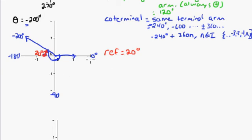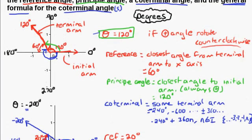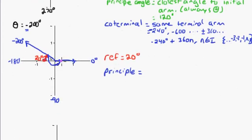The principal angle — remember — is the closest angle to the initial arm, and it's always positive. So starting from the initial arm and rotating positively to the terminal arm: we had 20 degrees here, and this side was 180, so subtracting the 20 degrees gives us 160 degrees. So the principal angle is 160 degrees.